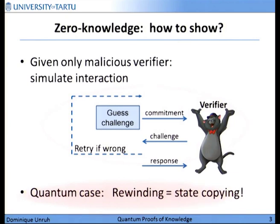However, in the quantum case, this approach is much more tricky. The rewinding here is not well defined in a quantum mechanical setting. What this precisely means is that at this point you copy the state of the verifier, and if you reach this point, you restore the state to the copy you made. But quantum states cannot be copied — that's one of the laws of quantum mechanics. So we cannot do that and we need an alternative solution.